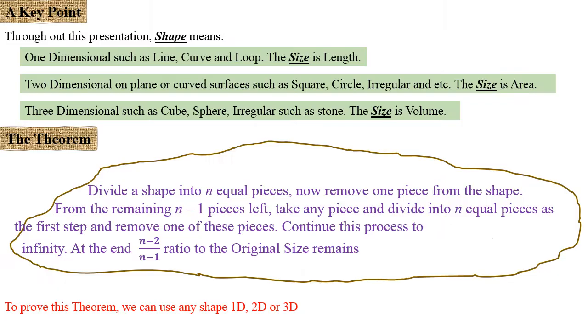There are a few points I need to clarify before we start analyzing and stating this theorem. Firstly, whenever we mention shape, shape can be one-dimensional such as line, curve, and loop, and the size in this case is length.